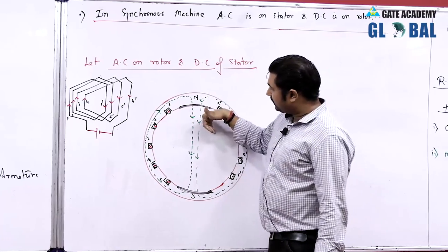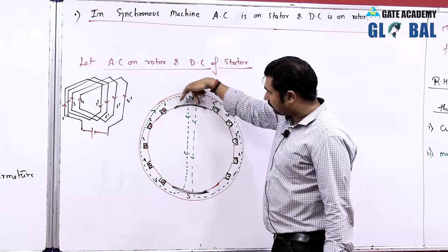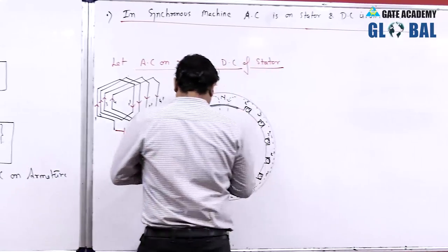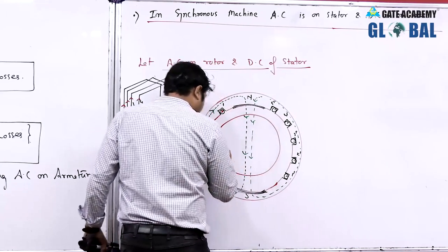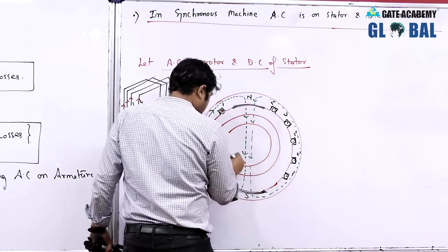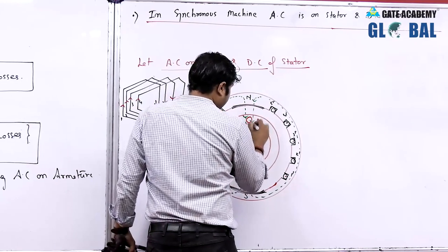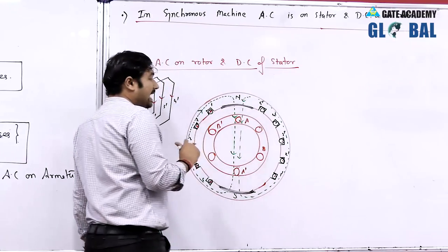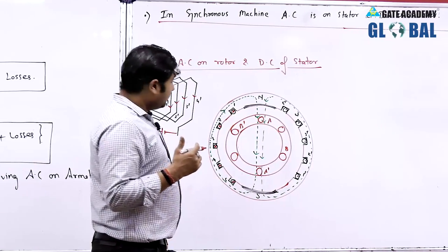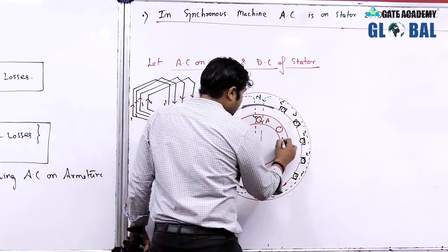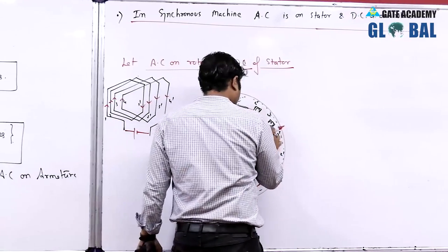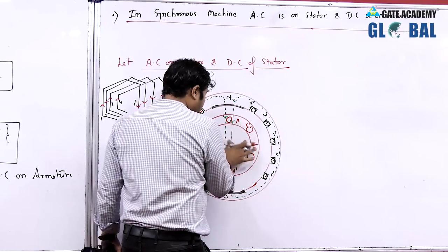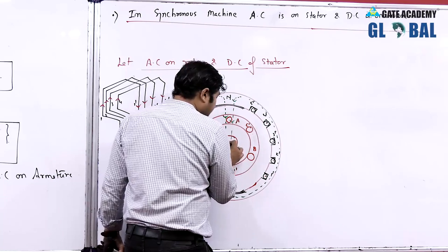Because of the current flowing in this way, the flux takes a path such that this portion of the stator surface acts as north and this portion as south. Now we have a rotor that is three-phase: AA-dash winding, BB-dash 120 degrees apart, and CC-dash. When I say three-phase balanced winding, the windings are identical and displaced in space by 120 degrees.